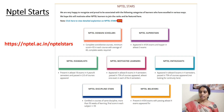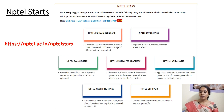Coming to the next category, NPTEL Evangelist. In this, the student should write at least 18 exams in 4 years, which is 8 semesters. In these 8 semesters, the student should write at least 18 exams, and among these 18 exams, must pass at least 12 courses. Then only they will be getting the NPTEL Evangelist.